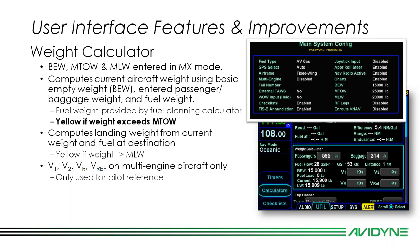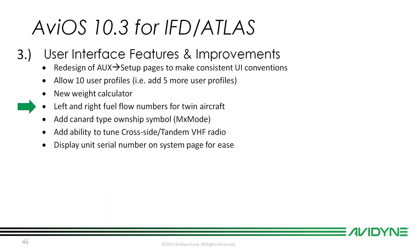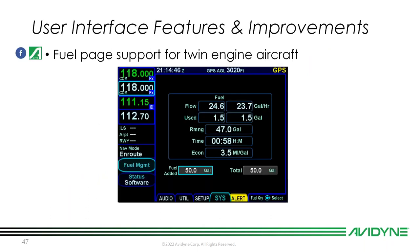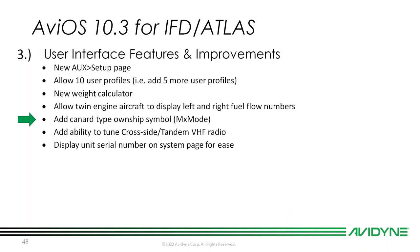For multi-engine folks, the weight calculator will also calculate V1, V2, VR, and VREF — though that is reference only. We also have new left and right fuel flow numbers for twin aircraft. If you have it set up in maintenance mode for multi-engine, and you have a fuel totalizer like an EDM 930 or similar engine monitor piping information to the IFD, you'll see left and right fuel flow and fuel used calculations.